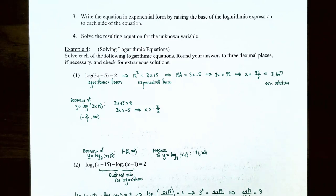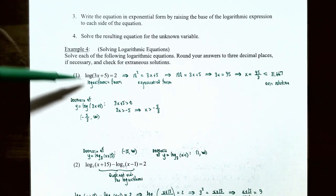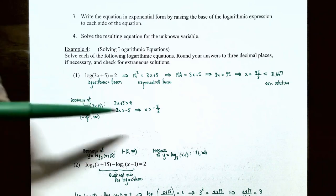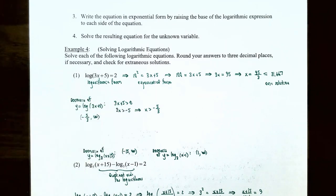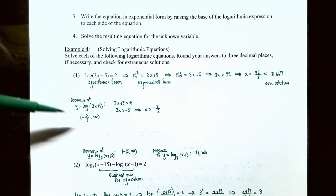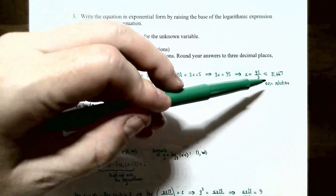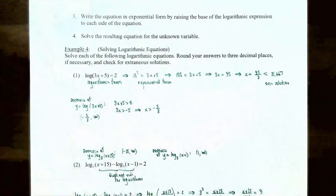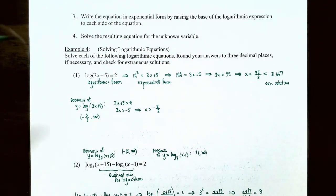Check whether x ≈ 31.667 is in the domain of log₁₀(3x+5). The domain requires 3x+5 > 0, so x > −5/3. Since 31.667 is well above −5/3, it is in the domain and is a valid solution — not extraneous.